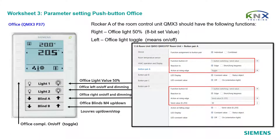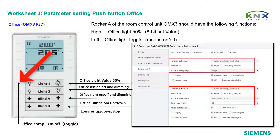Parameter setting push button office. Rocker A of the room control unit QMX3 should have the following functions: right button — office light 50% 8-bit set value; left button — office light toggle, meaning on/off with one button. A change is also planned for the office lighting. So far, the group control for both lights only turns on and off. But it is also possible to change the configuration so that you can use an in-between state, which is a light level of 50%.